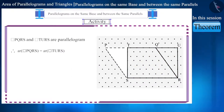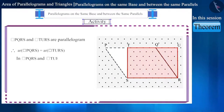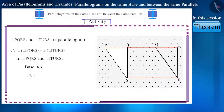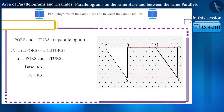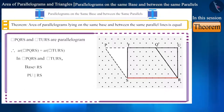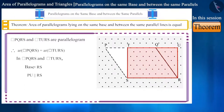Friends, parallelograms PQRS and TURS are located on the same base RS and between the same parallel lines PU and RS, and their area is also the same. This is a theorem that states: the area of parallelograms lying on the same base and between the same parallel lines is equal.